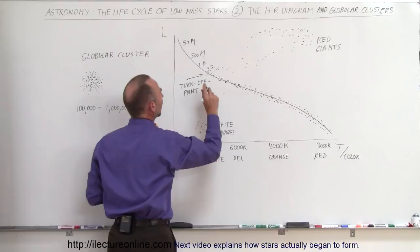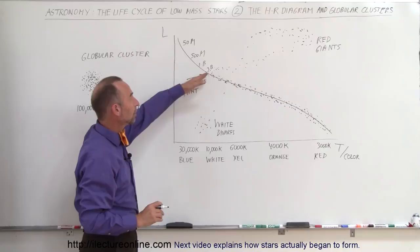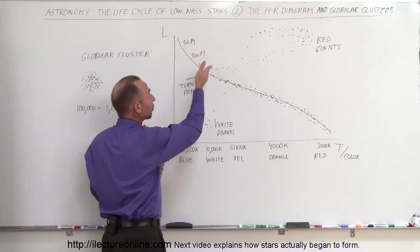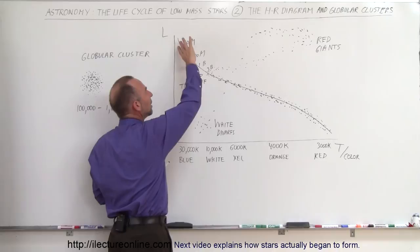If the turn-off point was at a position where stars would no longer remain on the main sequence and would finish their main sequence stage after 3 billion years, that would tell us the star cluster was about 3 billion years old. Any stars that are less than 3 billion years old would have already changed from a main sequence star into a red giant.